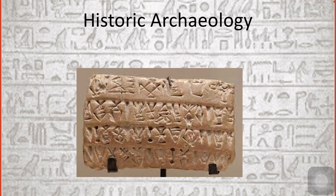Historical archaeology incorporates written records into archaeological research. One of the most famous examples is the discovery and decipherment of the Rosetta Stone — a large slab of marble discovered near Rashid, Egypt, by French archaeologists in 1799. The stone is inscribed with a decree made on behalf of Pharaoh Ptolemy V, written and carved in three different languages.